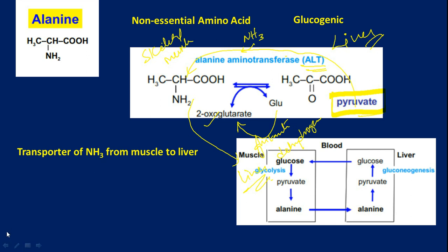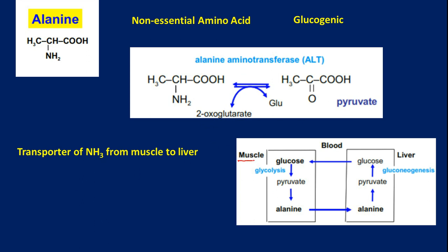To summarize what happens in the case of alanine: in muscle, glucose undergoes glycolysis to become pyruvate. The pyruvate takes up ammonia obtained from alpha amino acids, and alanine is synthesized. This alanine is sent to the liver, where alanine is converted to pyruvate — alpha-ketoglutarate is converted to glutamic acid. Then pyruvate is converted to glucose via gluconeogenesis. This entire process is what we call the pyruvate-glucose cycle or alanine-glucose cycle.